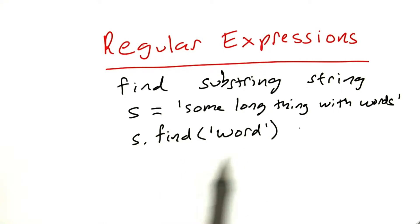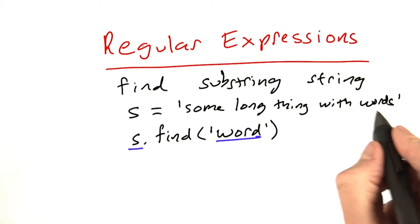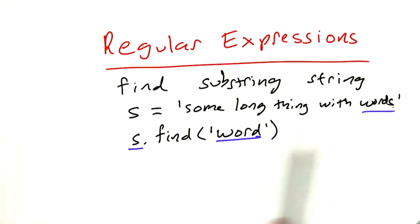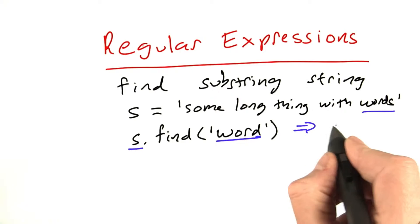For example, s.find of word will return the position in which the string word occurs within s and return that index if it exists. So in fact, word does exist. So it will return that index 0, 1, 2, 3, 4, and so on. It turns out the answer is 21.